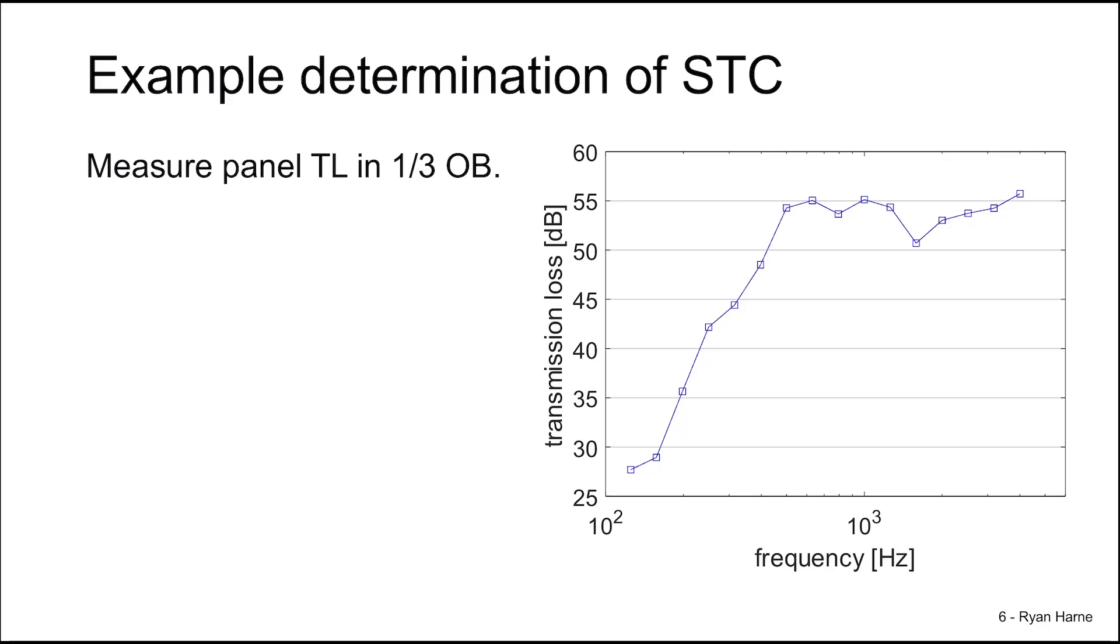Let's complete an example. We measure the transmission loss and plot it out in one-third octave bands. The data is shown here in blue. We first compare the ratings where there are few deviations, in other words, where the measured data is much greater than a given STC rating curve. So we'll start off with STC 46.